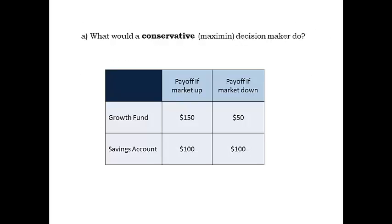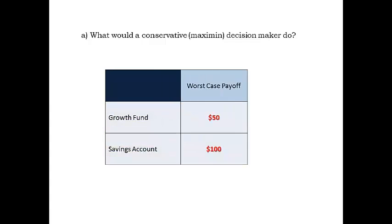A conservative decision maker looks at each decision alternative and focuses on the worst case outcome. For the growth fund, the worst outcome is $50. For the savings account, the worst outcome is $100. Comparing the worst case outcomes, the conservative decision maker chooses the best of them. For our example, the savings account is the choice with the best of the worst payoffs. You may think of this as the least bad alternative, or best of the worst decision criterion, known as maxi-min for profit examples.